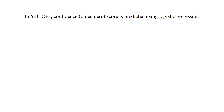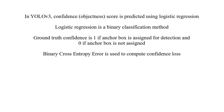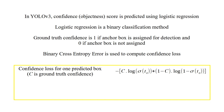In YOLO version 3, objectness score is predicted using logistic regression. Logistic regression is a binary classification method. Ground truth confidence is 1 if the anchor box is assigned for detection, and 0 if the anchor box is not assigned. Binary cross entropy error is used to compute confidence loss. This is the confidence loss for one predicted box.